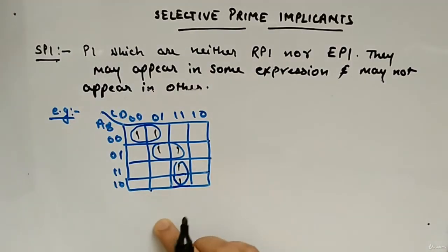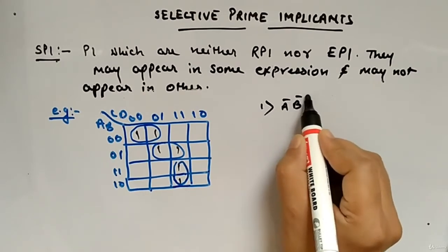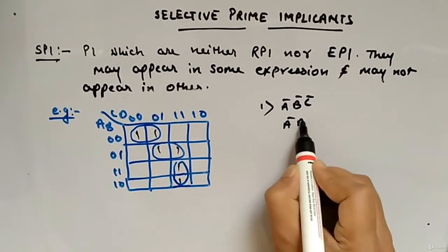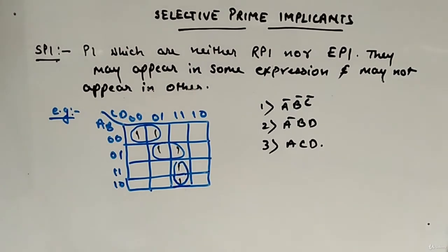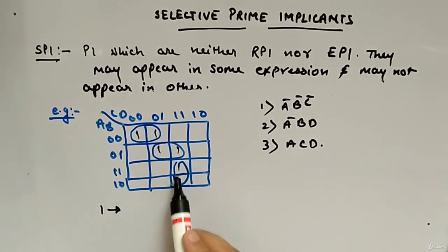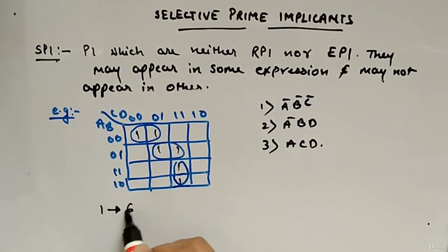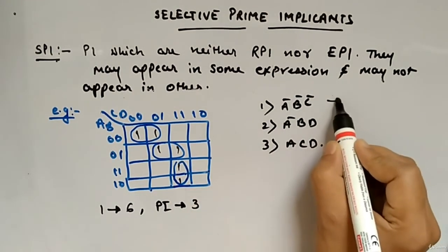Let's look at this next example. I'll write the group names. This group is A-bar B-bar C-bar. Then this group is A-bar B D. Third is this group which is A C D. So same thing we'll do — we will find prime implicants, essential prime implicants, everything we will calculate. For implicants, just count them: one, two, three, four, five, six — total number of implicants is six. For prime implicants: total three groups — the best possible groups — so three prime implicants.